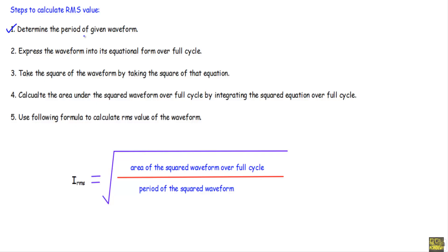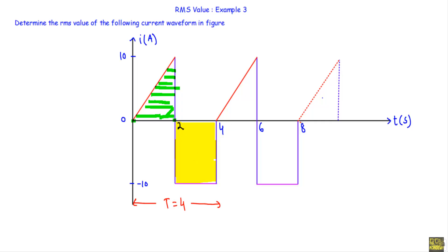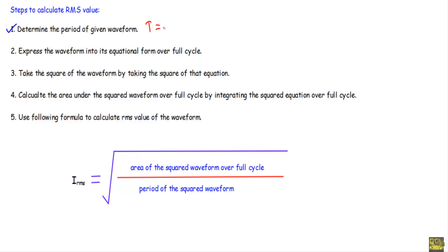First, we will determine the period of the given waveform. Looking at the current waveform, from zero to two seconds we have a triangle, and from two to four seconds we have a rectangle. Between zero to four seconds we have a triangle and rectangle, and in upcoming cycles we get a repetition of this pattern. Therefore, the time period T is equal to four seconds.